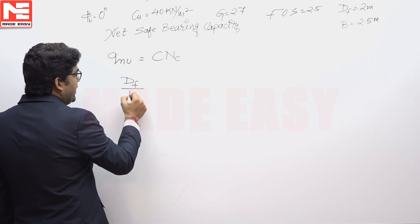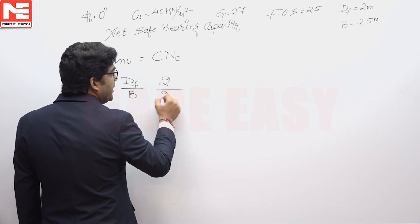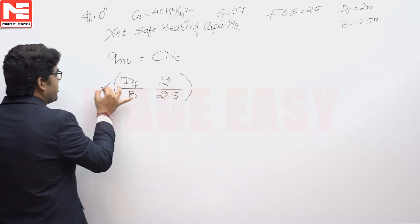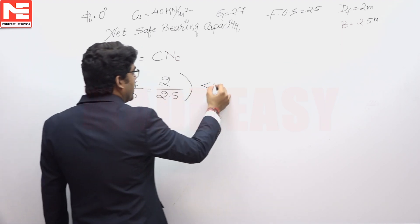In this question, DF by B equals DF is 2 meters divided by B is 2.5 meters, and this DF by B is actually in between 0 to 2.5.